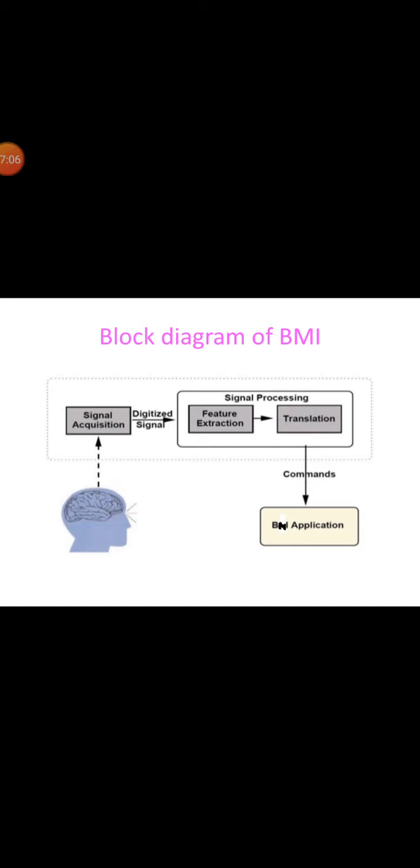The device output, the commands from the feature translation algorithm operate the external device providing functions such as selection, cursor control, robotic arm operation and so forth. The device operation provides feedback to the user thus closing the loop.